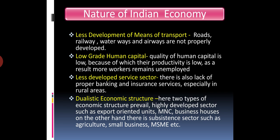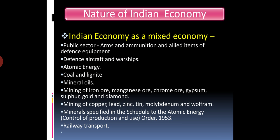The next characteristic is less development of means of transport. In India, road, railway, waterways, and airways have not been properly developed yet. The next is low-grade human capital — due to lack of proper nutrition, education, and skills, the quality of human capital is low, leading to low productivity, higher unemployment, and increased cost of production.